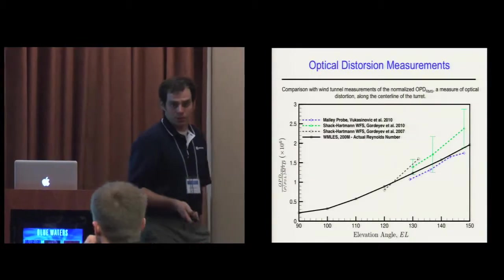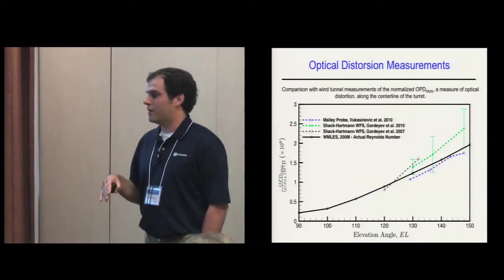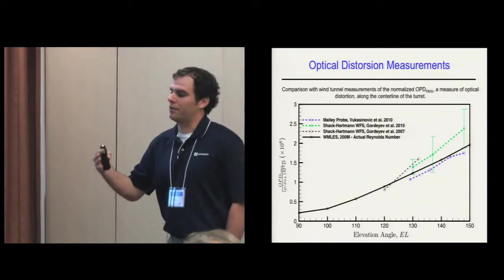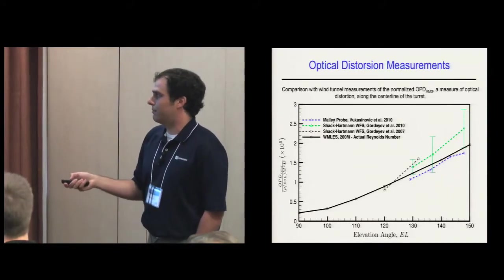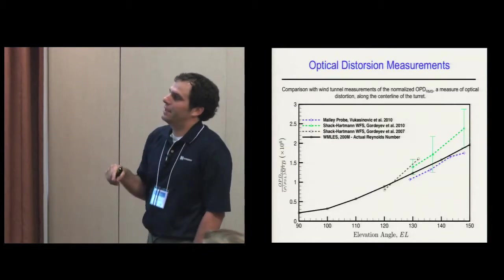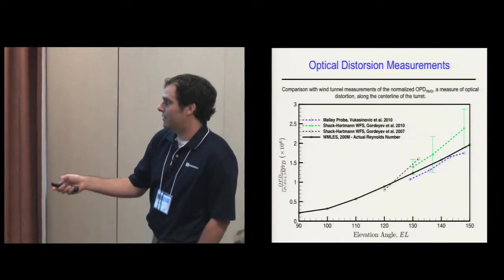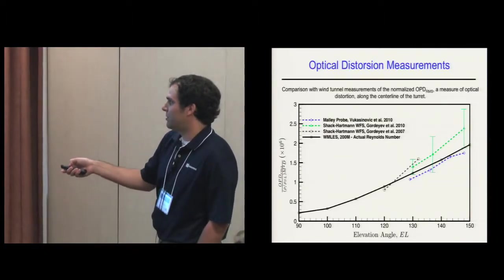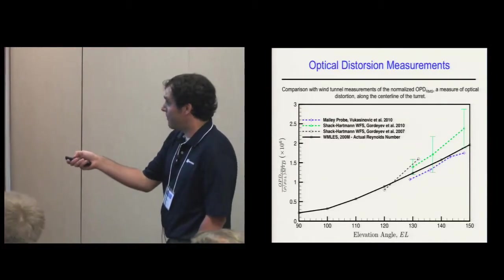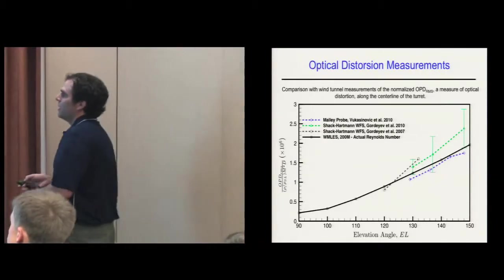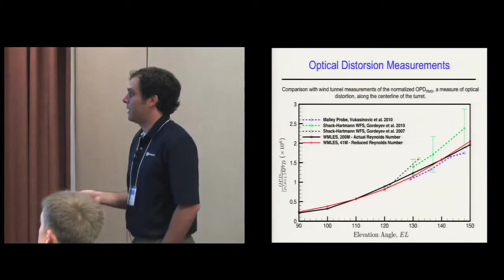This is a measure of optical distortion we look at because there's an equation that can predict far field intensity based on the OPD-RMS, which is the relative phase distortion of a wavefront - the spatial RMS normalized. You can see we capture a similar trend. We're a little bit underneath the experimental measurements, but there are large error bars there.